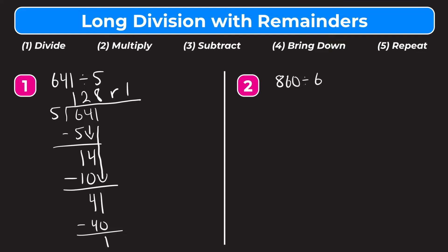The answer to 641 divided by 5 is 128 remainder 1. All that means is 5 can go into 641 128 times and there will be 1 left over. Said another way, 5 times 128 is 640, and 641 minus 640 is 1 — so there's 1 left over when you multiply 5 times 128 to get to 641.